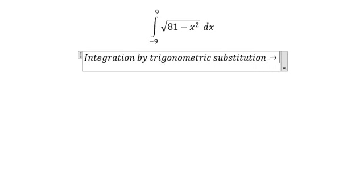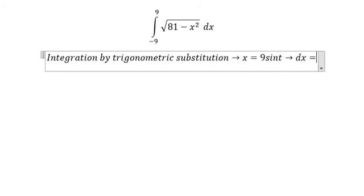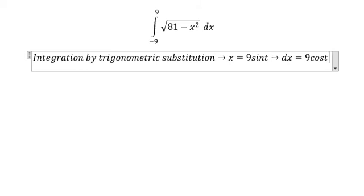We have x equals 9 sine t, so dx equals 9 cosine t dt.